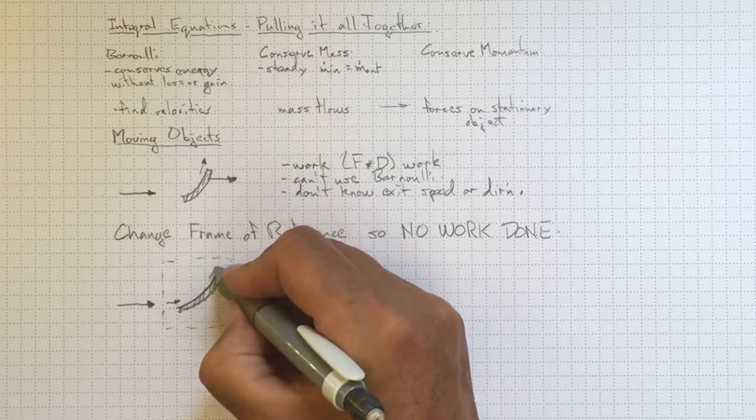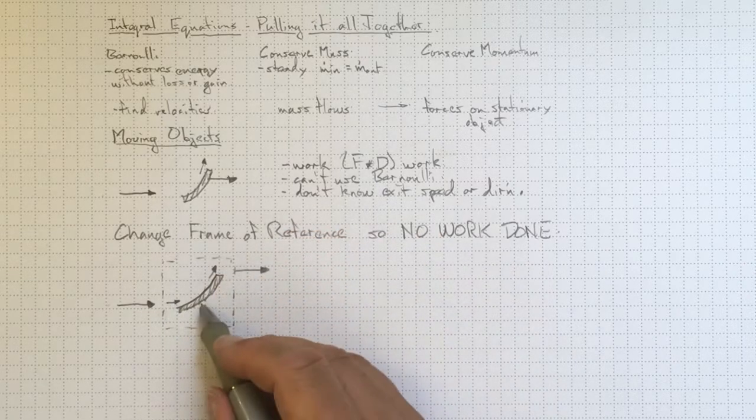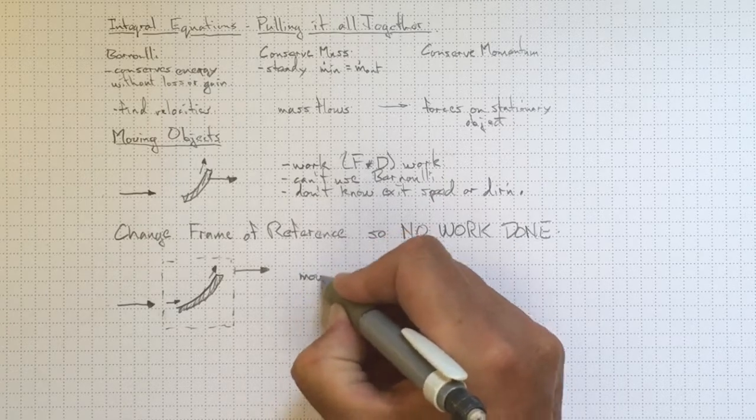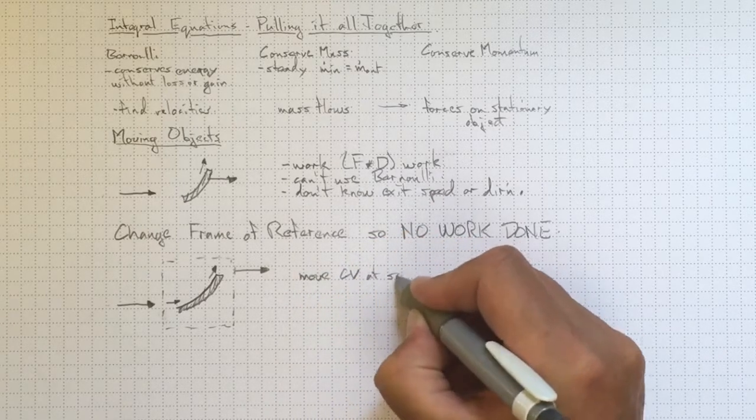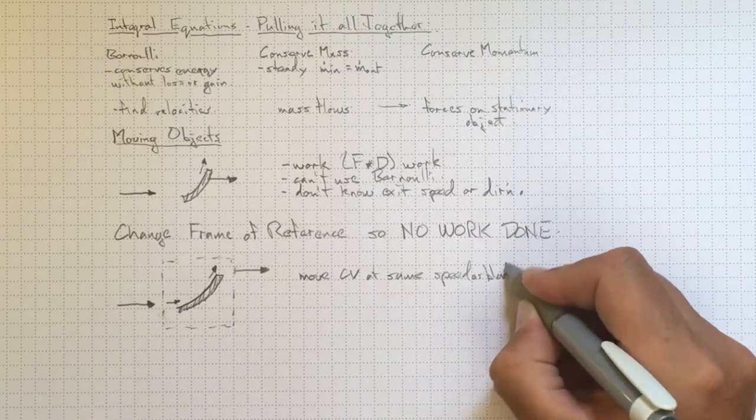And Bernoulli's equation is going to tell us that that velocity remains the same because there's no work done. So we're going to move the control volume at the same speed as the object, in this case, the blade.